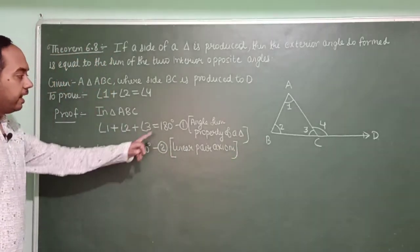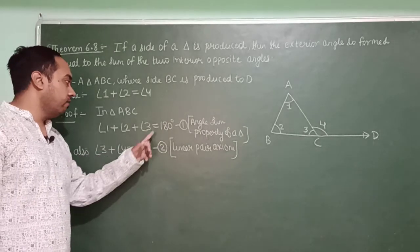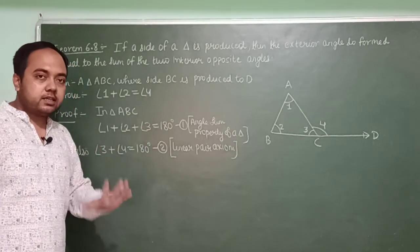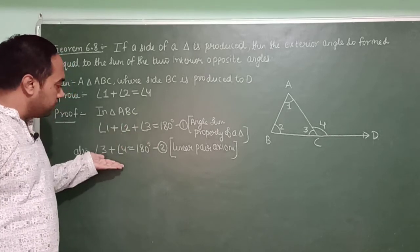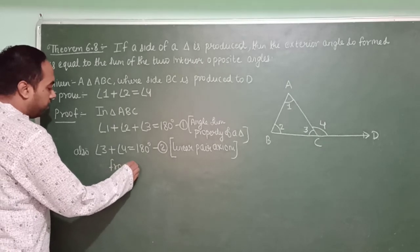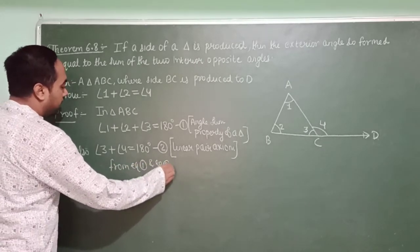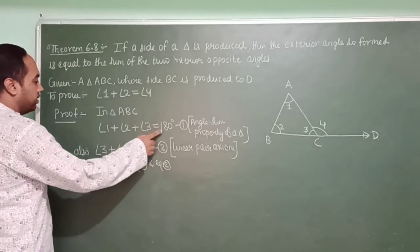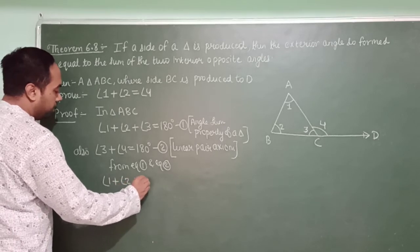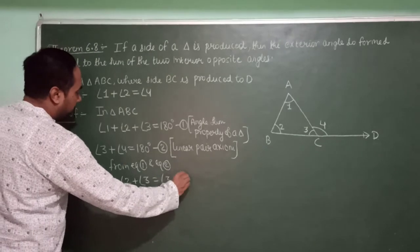In these two equations, the right-hand sides are both equal to 180. Since their right-hand sides are the same, their left-hand sides are also the same. From equation 1 and equation 2, we get: angle 1 plus angle 2 plus angle 3 equals angle 3 plus angle 4.